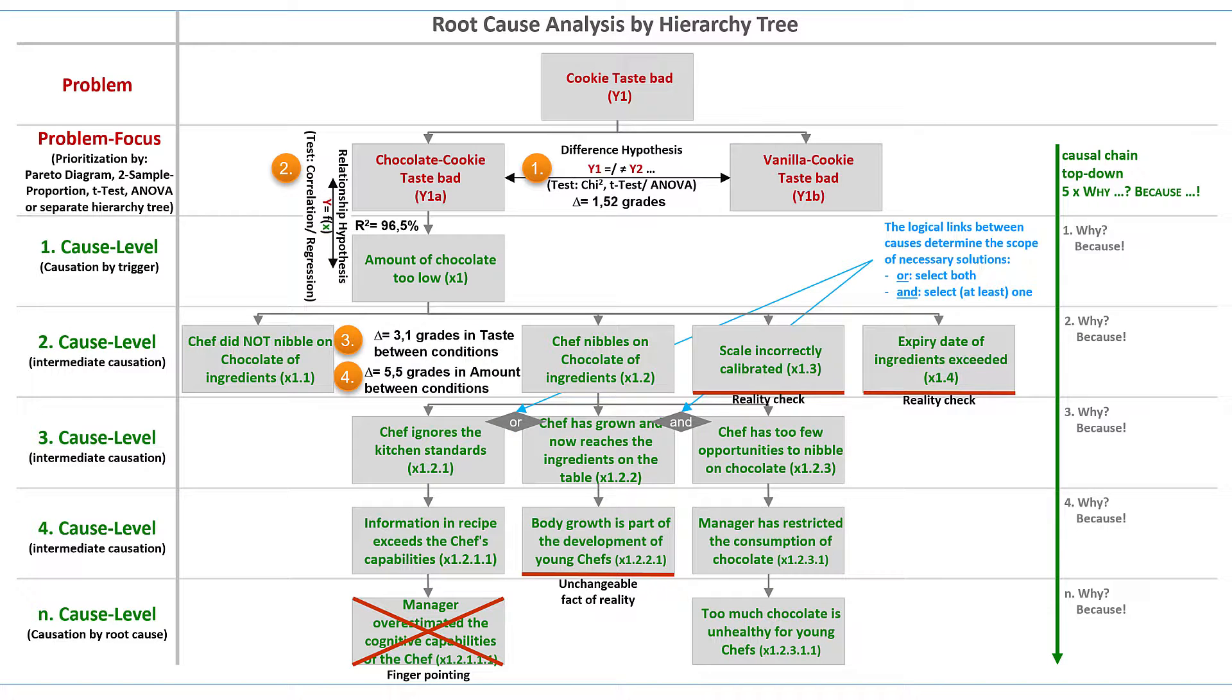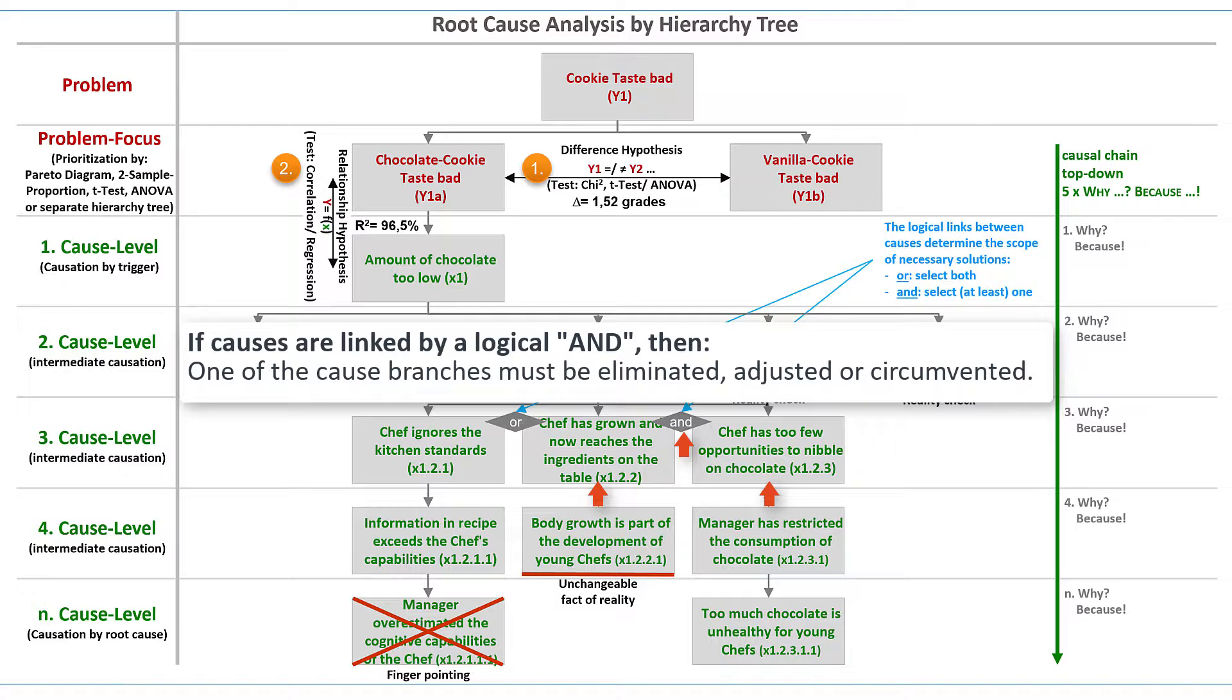If on the other hand two causes are linked with the logical AND, then only one of the roots needs to be eliminated. For example, the causes 'Chef has grown and now reaches the ingredients on the table' and 'Chef has too few opportunities to nibble on chocolate' are linked with the logical AND.